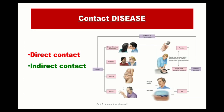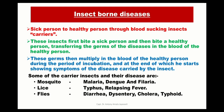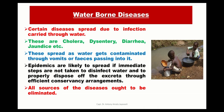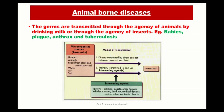Contact diseases occur by direct or indirect contact. Direct contact is touching one another; indirect contact is touching substances or materials used by infected persons. Insect-borne diseases are caused by insects acting as carriers — for example, mosquitoes can spread malaria, dengue, and filaria, while flies can spread diarrhea, dysentery, cholera, and typhoid. Water-borne diseases spread through water; examples are cholera, dysentery, diarrhea, and jaundice. Animal-borne diseases include rabies, plague, anthrax, and tuberculosis, where animals act as the agency of spreading diseases.